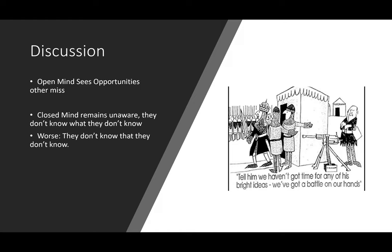This little cartoon shows that when people are closed-minded — this guy's going out to war, he's got his sword, and there's a salesman selling Gatling guns. The king says 'tell him we ain't got time for any of his bright ideas, we've got a battle on our hands.' Meanwhile there's a weapon there that could win the entire battle, but the closed-minded thought process precludes even taking a look.